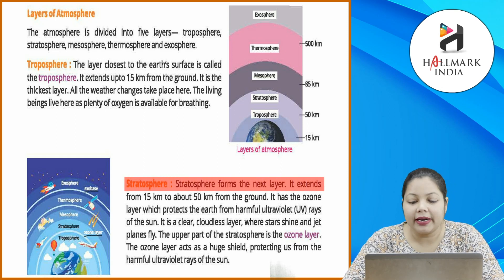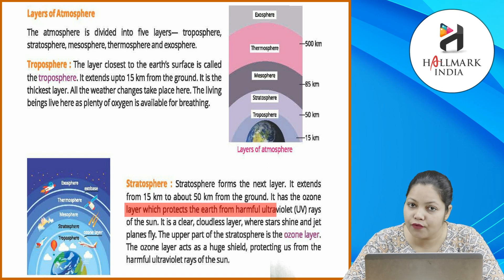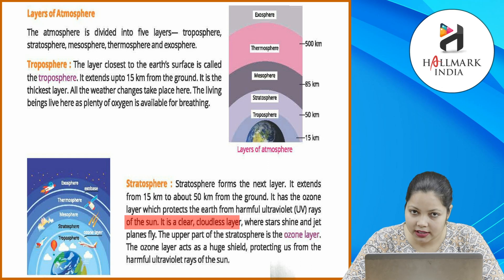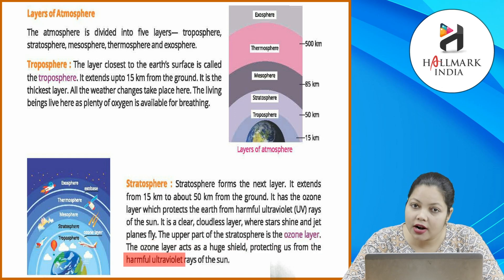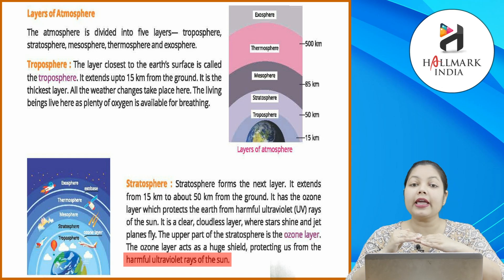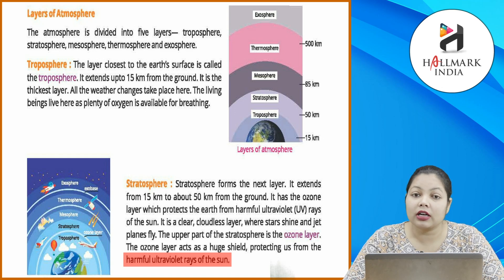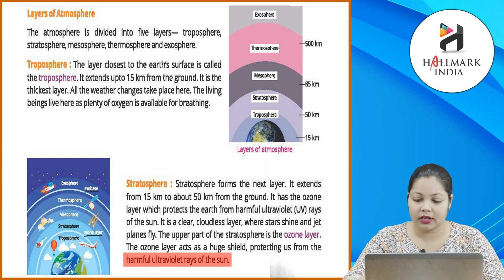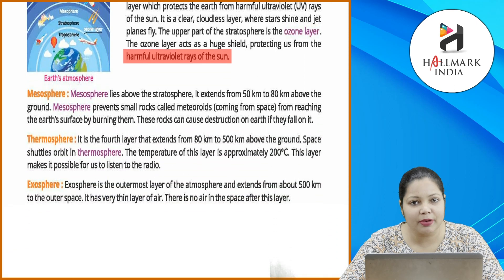Stratosphere: stratosphere forms the next layer. It extends from 15 km to about 50 km from the ground. It has the ozone layer which protects the earth from harmful ultraviolet rays of the sun. It is a clear, cloudless layer where stars shine and jet planes fly. The upper part of the stratosphere is the ozone layer, which acts as a huge shield protecting us from the harmful ultraviolet rays of the sun. Stratosphere 15 se 50 km tak hoti hai, jahan pe aap clouds, stars aur jets ko uddte dekhte hain. Ozone layer humein sun ki ultraviolet rays se bachane mein protect karti hai.